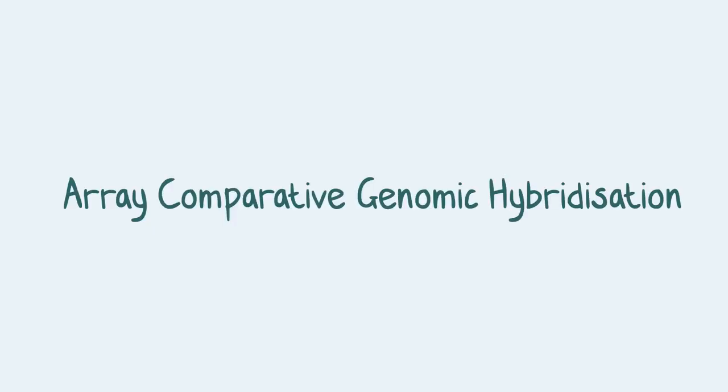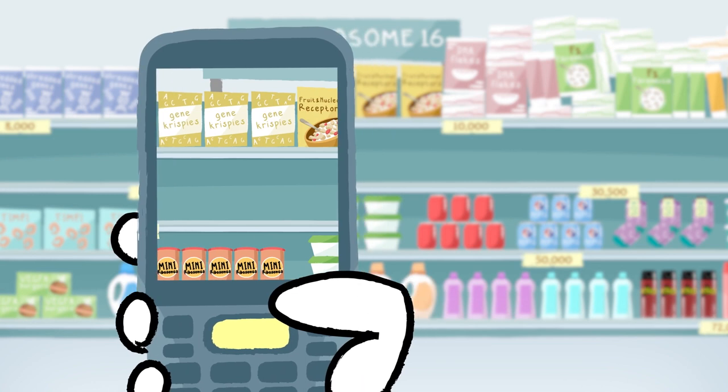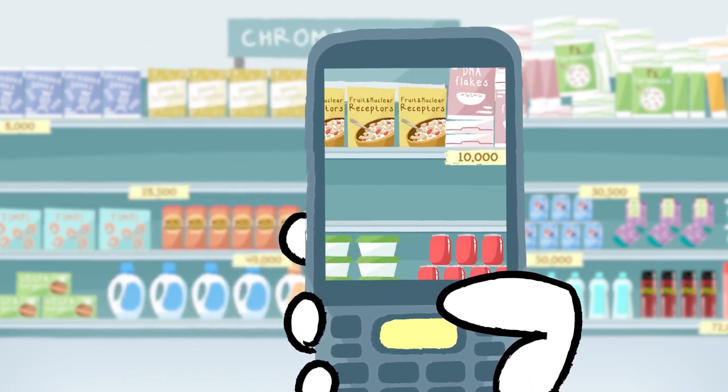An array comparative genomic hybridisation test, or an array CGH test for short, is a clever way of doing a stock take of the entire supermarket.